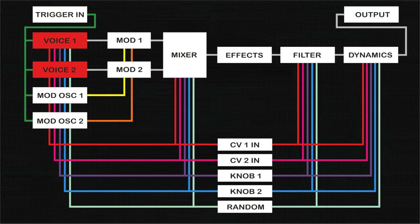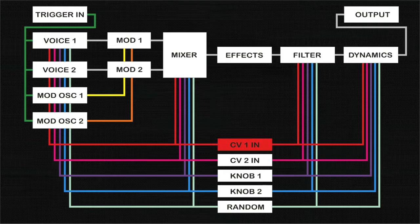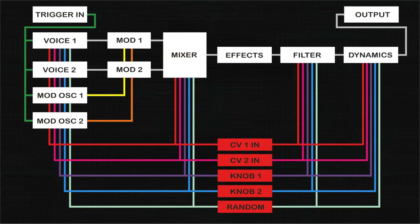The sample selection for each voice can be modulated by external CV 1 or 2, knob 1 or 2, randomized, or multiple combinations of these sources.